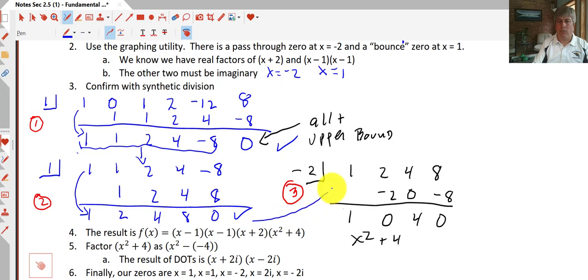So I grab those coefficients. And I put them up here. So I have coefficients of 1, 2, 4, and 8. I prime my pump with the 1. And I multiply negative 2 times 1 is negative 2, and add down. Negative 2 times 0 is 0, and add down. Negative 2 times 4 is negative 8, and add down. Excellent. Confirms, again, that negative 2 is a factor because my remainder is 0. My final factor is x squared plus 4.